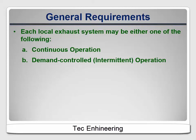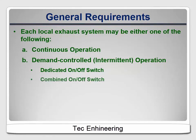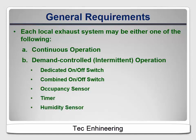Demand controlled systems are much more common and are often also called intermittent systems. They can be activated by a variety of means: a dedicated on-off switch like a wall switch for a bath fan or an integrated switch for a range hood, or a combined switch where turning on the light also turns on the fan. Other acceptable options include occupancy sensors, timers, and humidity sensors for bath fans.